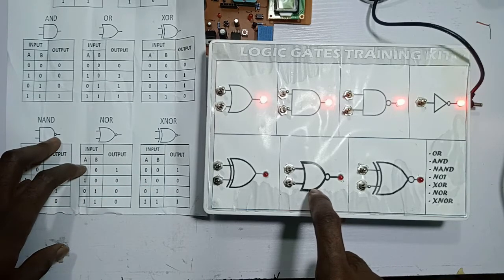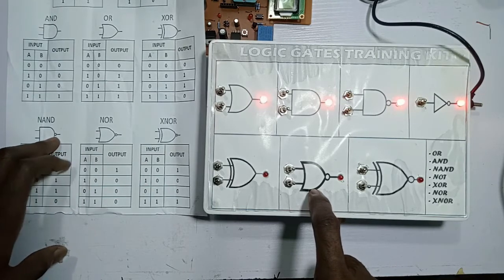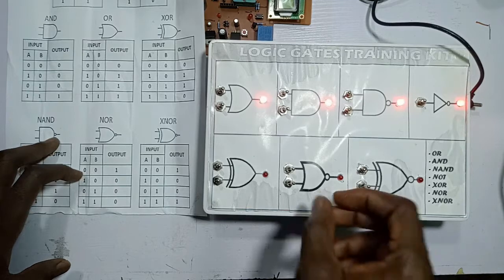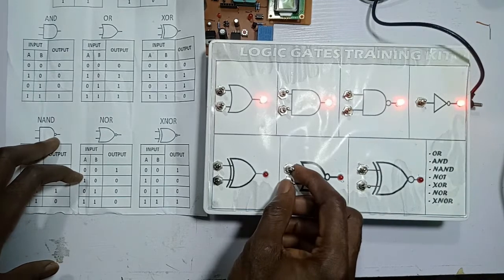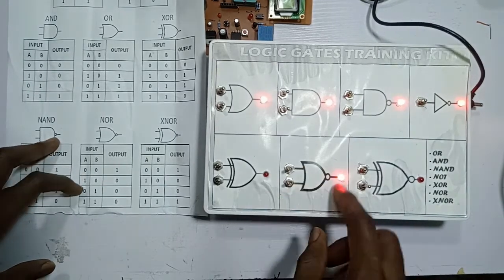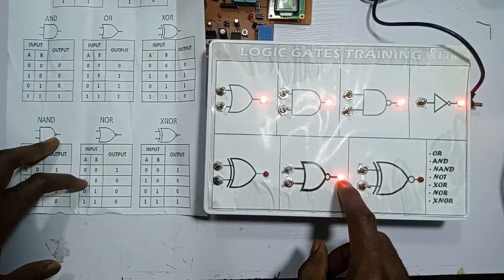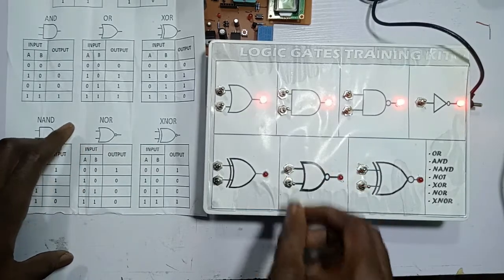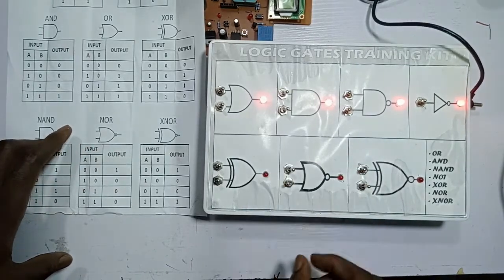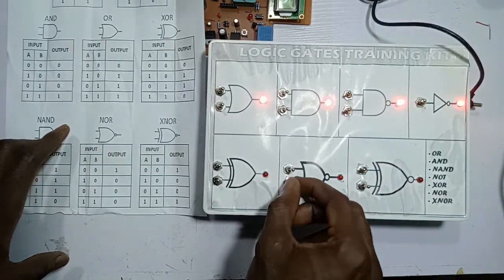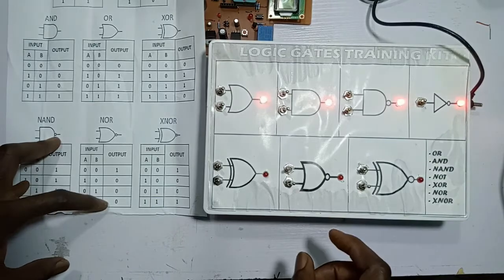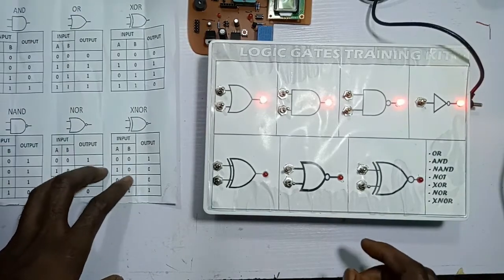For the NOR gate, the output will be one when the input is zero zero; otherwise it's zero. Let me take it to zero zero — this is zero, this is zero, so the output is one. Any other combination will give you zero.